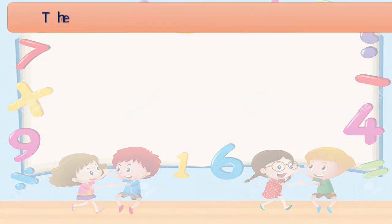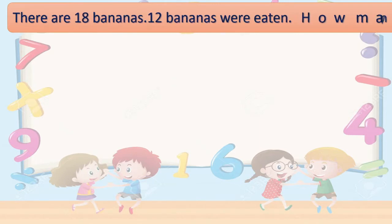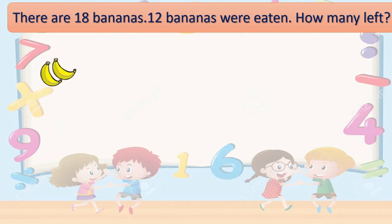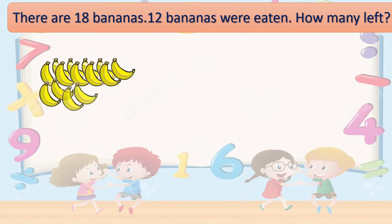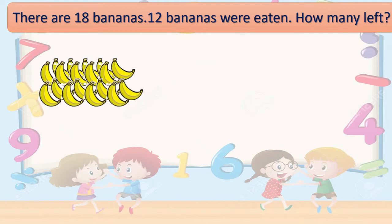Here is a sum. There are 18 bananas. 12 bananas were eaten. How many are left? How many bananas were there? 18. See: 2, 4, 6, 8, 10, 12, 14, 16, 18. 18 bananas were there.